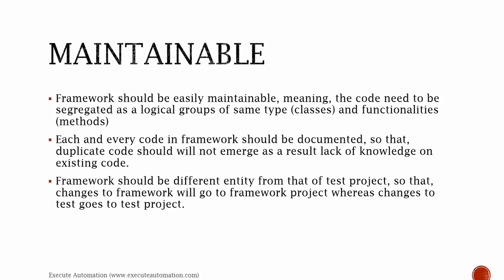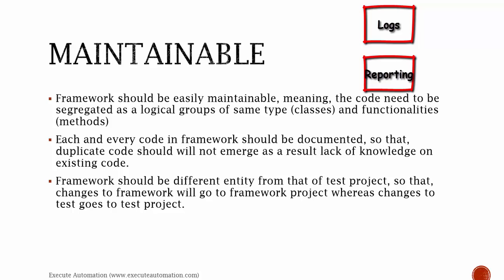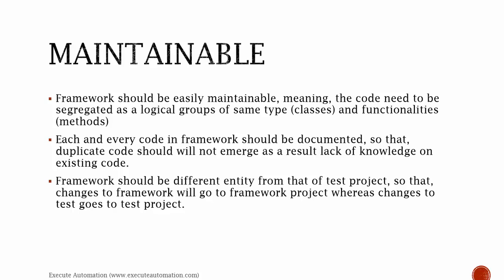Maintainable: the framework should be easily maintainable, meaning the code needs to be segregated as a logical group of the same types — in coding we call them classes. For example, if you're going to write a logging functionality, keep that as a separate type or group. If you're going to perform operations on reporting of your automation results, keep them as a separate type. Similarly, write a wrapper class for Selenium as a separate type. Each piece of code in the framework should also be documented so that duplicate code will not emerge due to lack of knowledge of existing code.